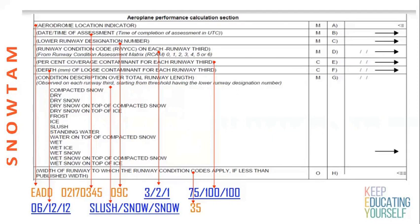Width of runway to which the runway condition applies: for example, if the runway width is 45 meters but the condition applies to only 35 meters, we write 35 here. This field is optional — if you wish to write it you may, otherwise leave it. After writing 35, press Enter and the aeroplane performance calculation section ends.